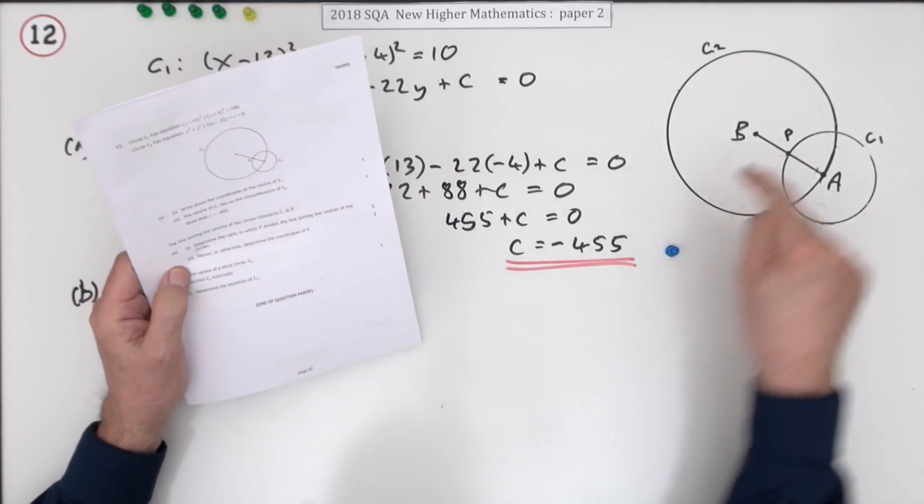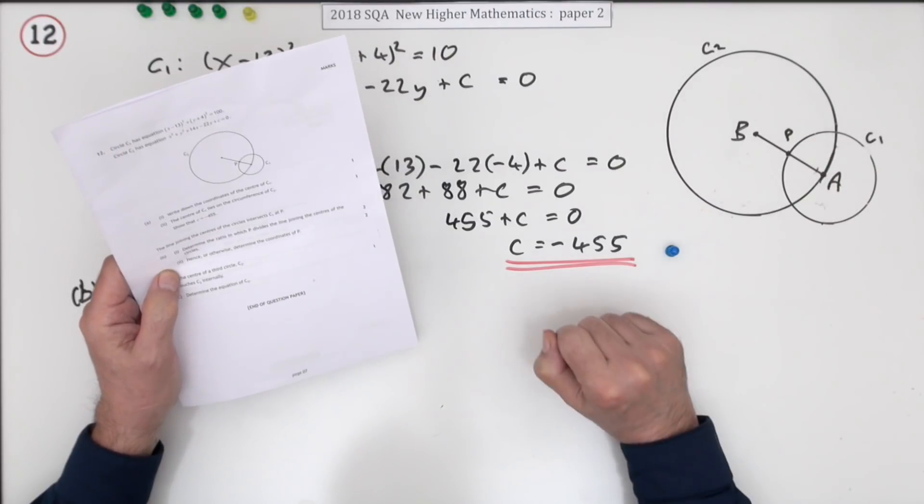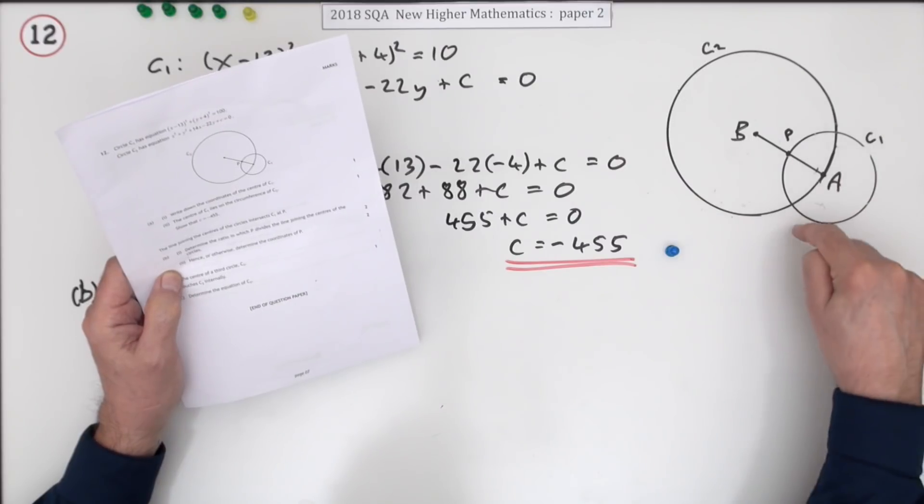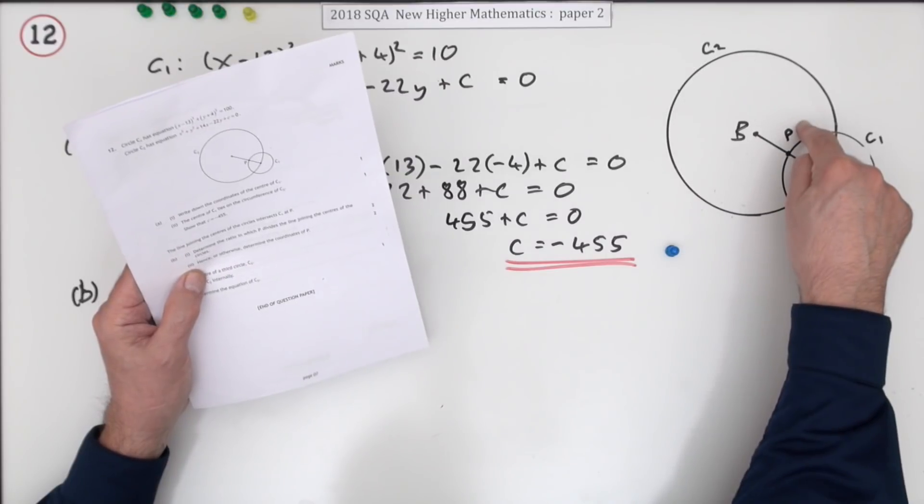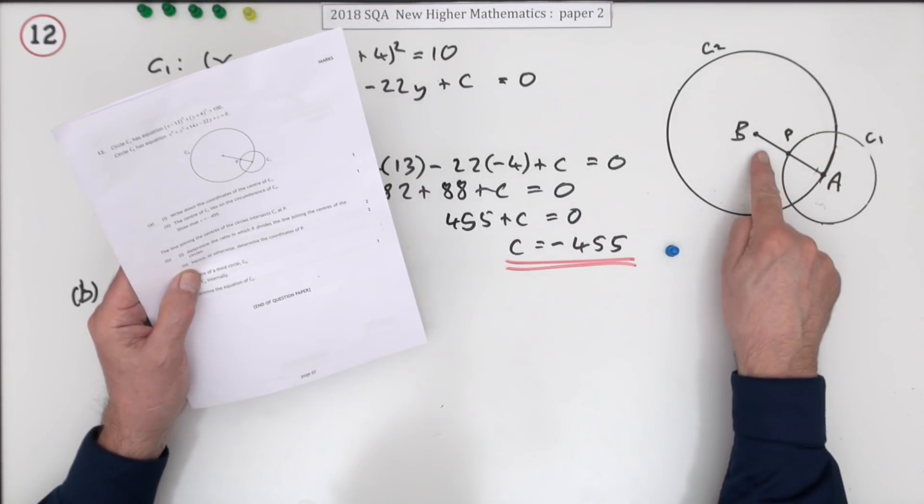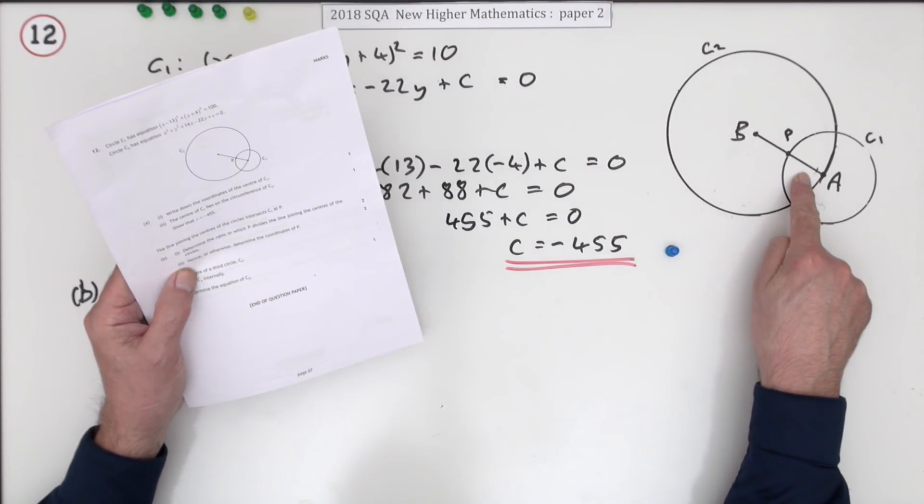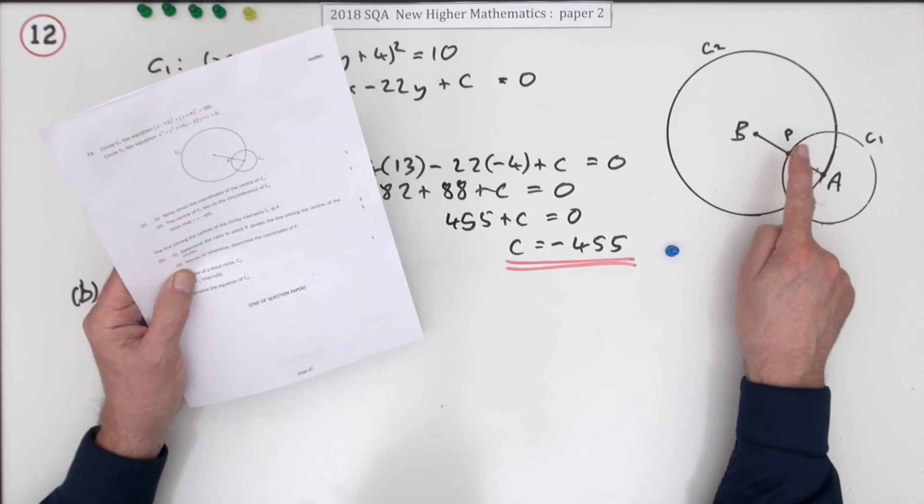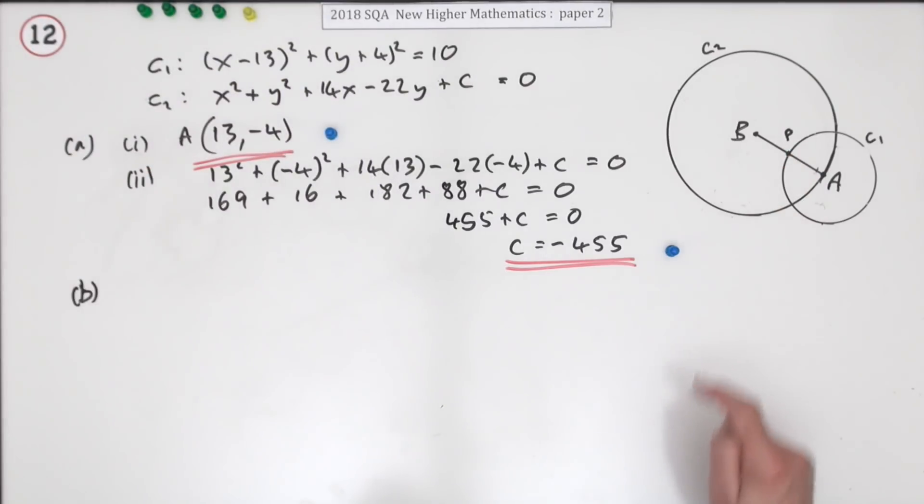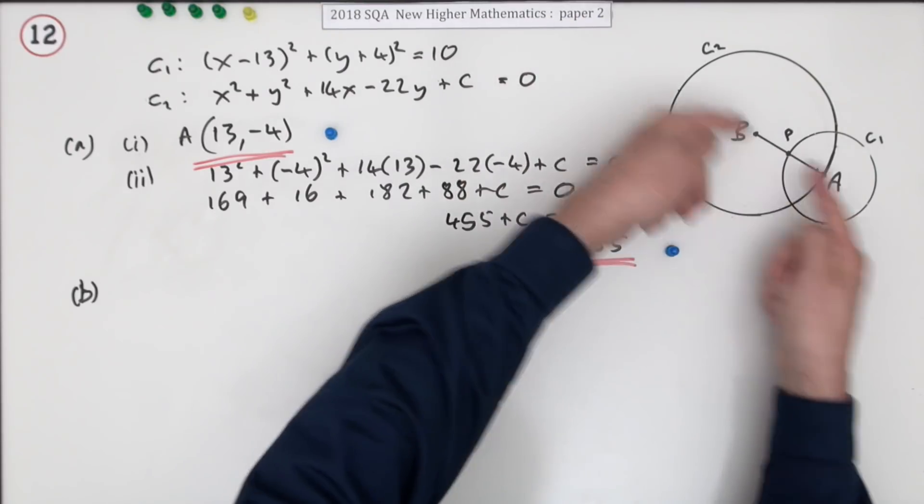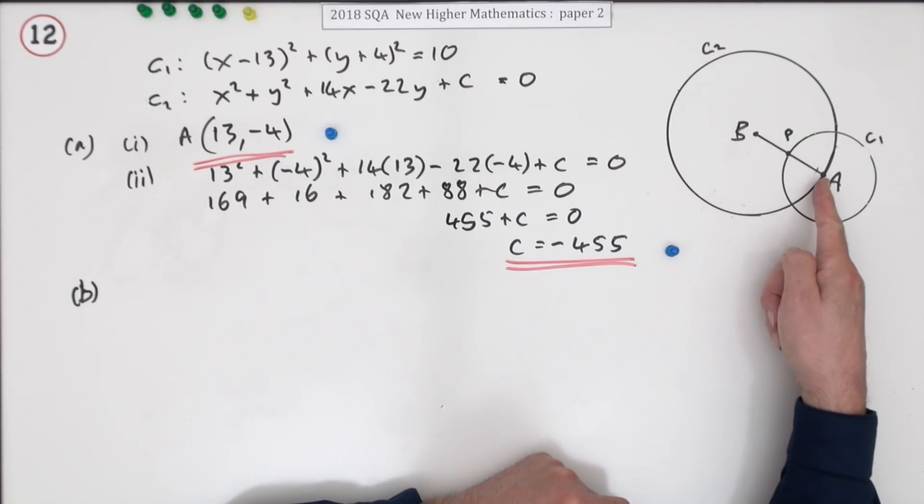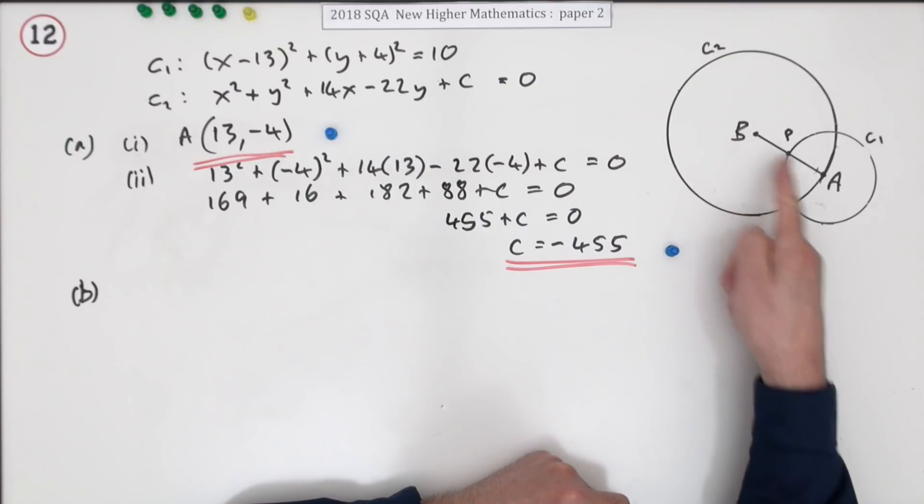Part b: the line joining the centers, that's the line I've drawn as BA, intersects circle C1 at P. Determine the ratio in which P divides the line joining the centers. Hence or otherwise determine the coordinates of P. You get four marks for finding the coordinates of P. The ratio will come from distances: the radius of the larger circle and the radius of the small circle.